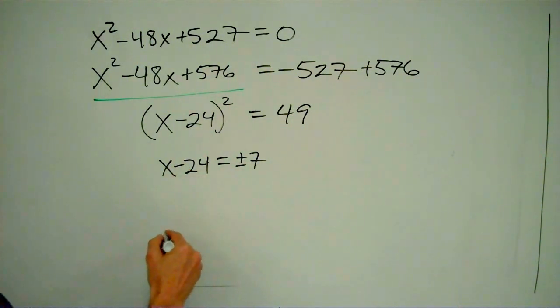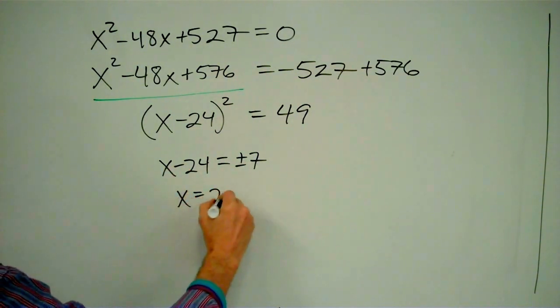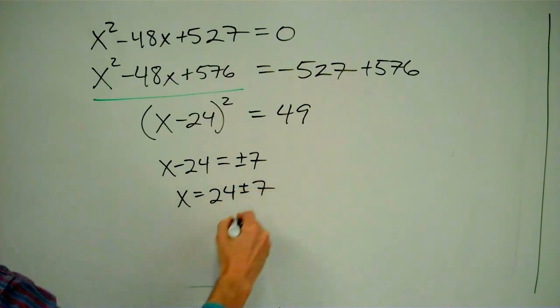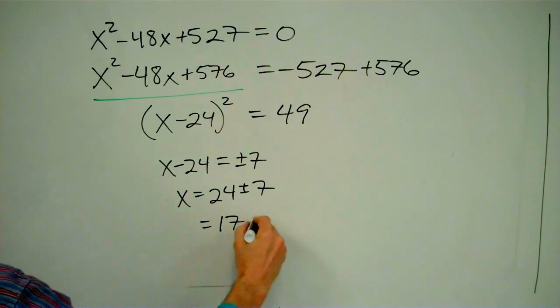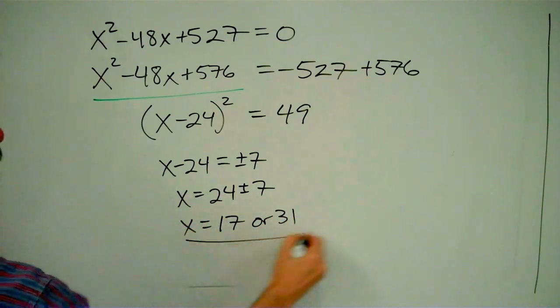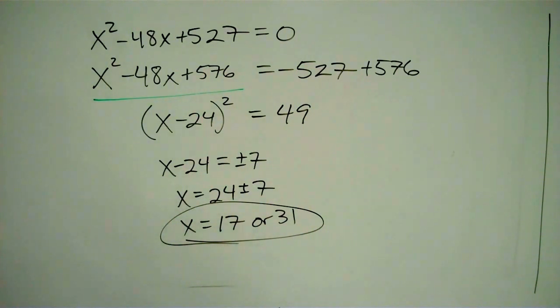So now we just add 24 to both sides and we get x = 24 ± 7. 24 - 7 is 17. 24 + 7 is 31. And those are my two values of x.